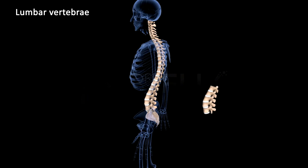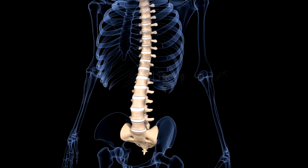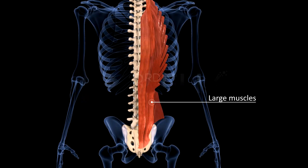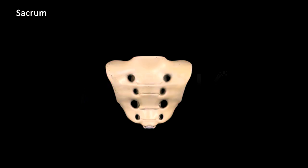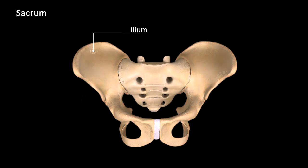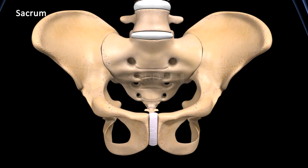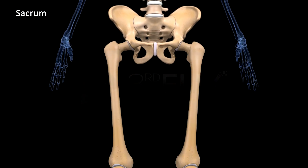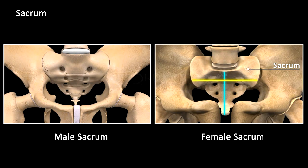There are five lumbar vertebrae in the abdominal region. These are the largest, thickest, and strongest vertebrae as they bear part of the weight of the trunk. They also provide surface for attachment of the large muscles of the back. The sacrum is a large triangular bone formed by the fusion of five sacral vertebrae. It articulates with the ilia of the pelvic girdle via the iliosacral joints, transferring the weight of the body to the legs. The sacrum is shorter and wider in females.